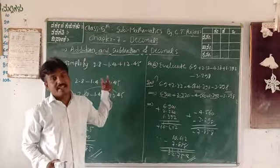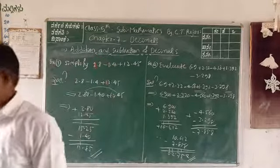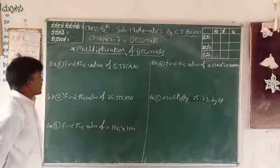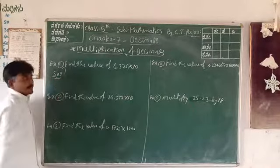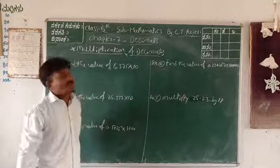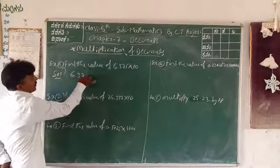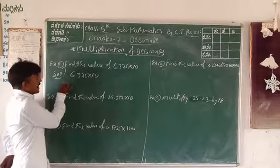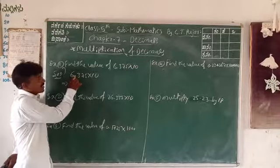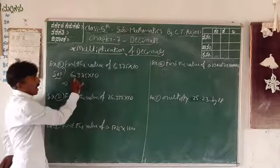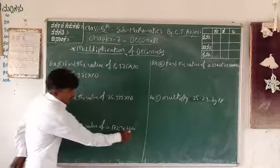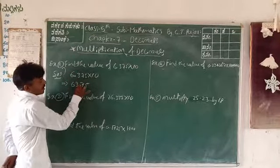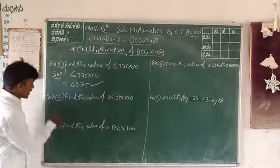Next is multiplication of decimal numbers. Multiplication of decimals with 10, 100, 1000 is very easy. First question: 6.375 × 10. There is one zero in 10, so slip the point one digit to the right — answer is 63.75.